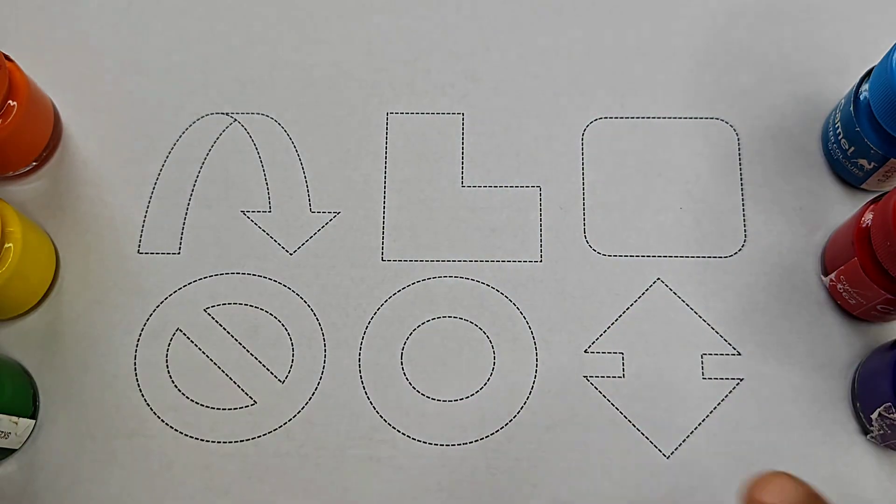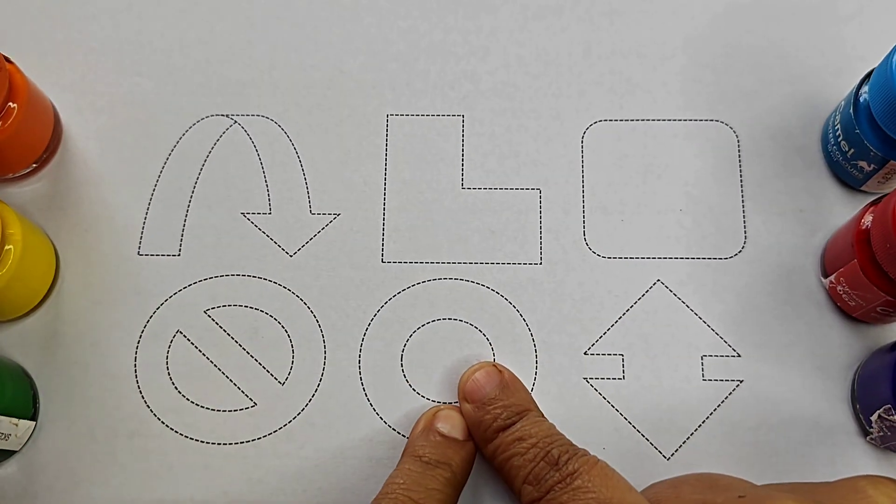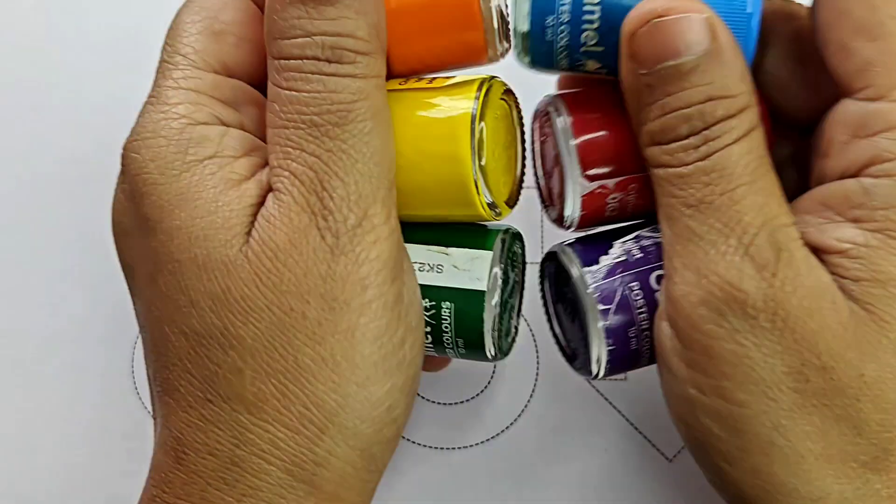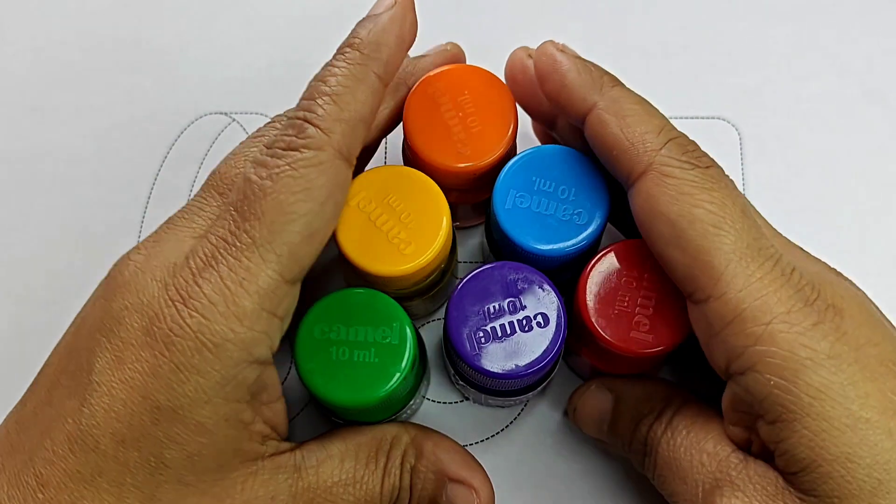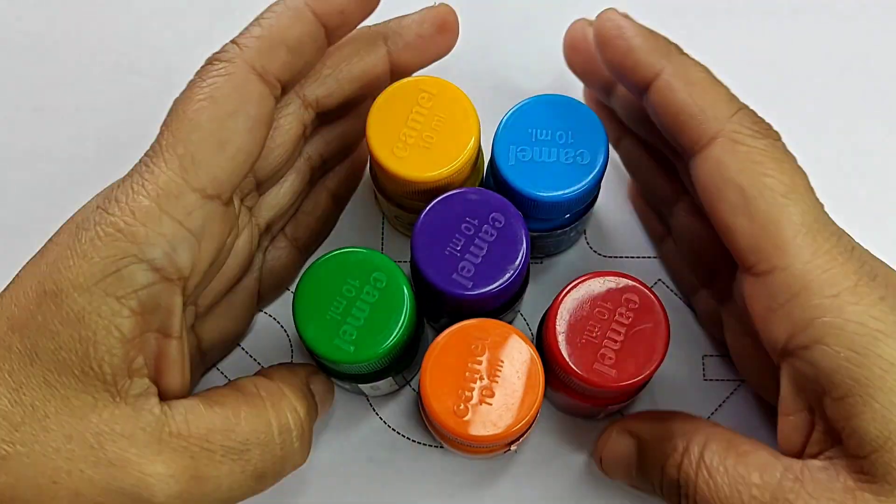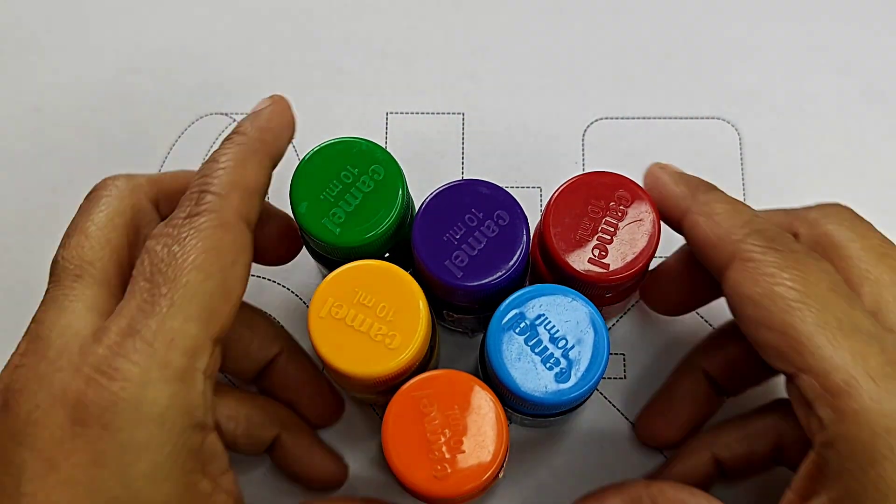Hello kids, let's learn some shapes and symbols. These are our shapes and symbols and know about the color name. These are our colors.